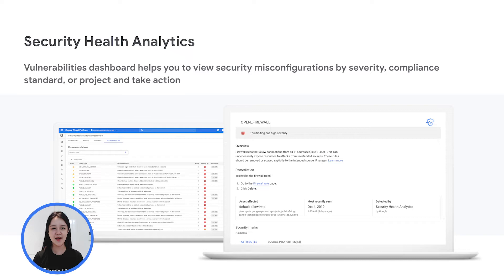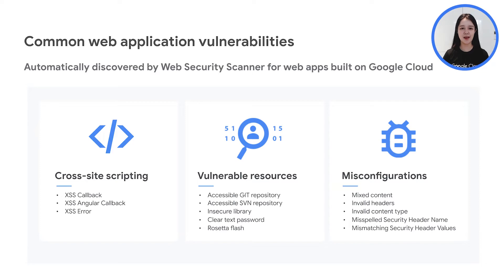With Security Health Analytics, you can identify misconfigured virtual machines, containers, network, storage, and identity and access management policies. SCC also has Web Security Scanner, which can automatically scan to detect key vulnerabilities in App Engine, Compute Engine, and Google Kubernetes Engine applications before deploying them to production, including those from categories in the OWASP Top 10 such as cross-site scripting, use of clear text passwords, and outdated libraries.